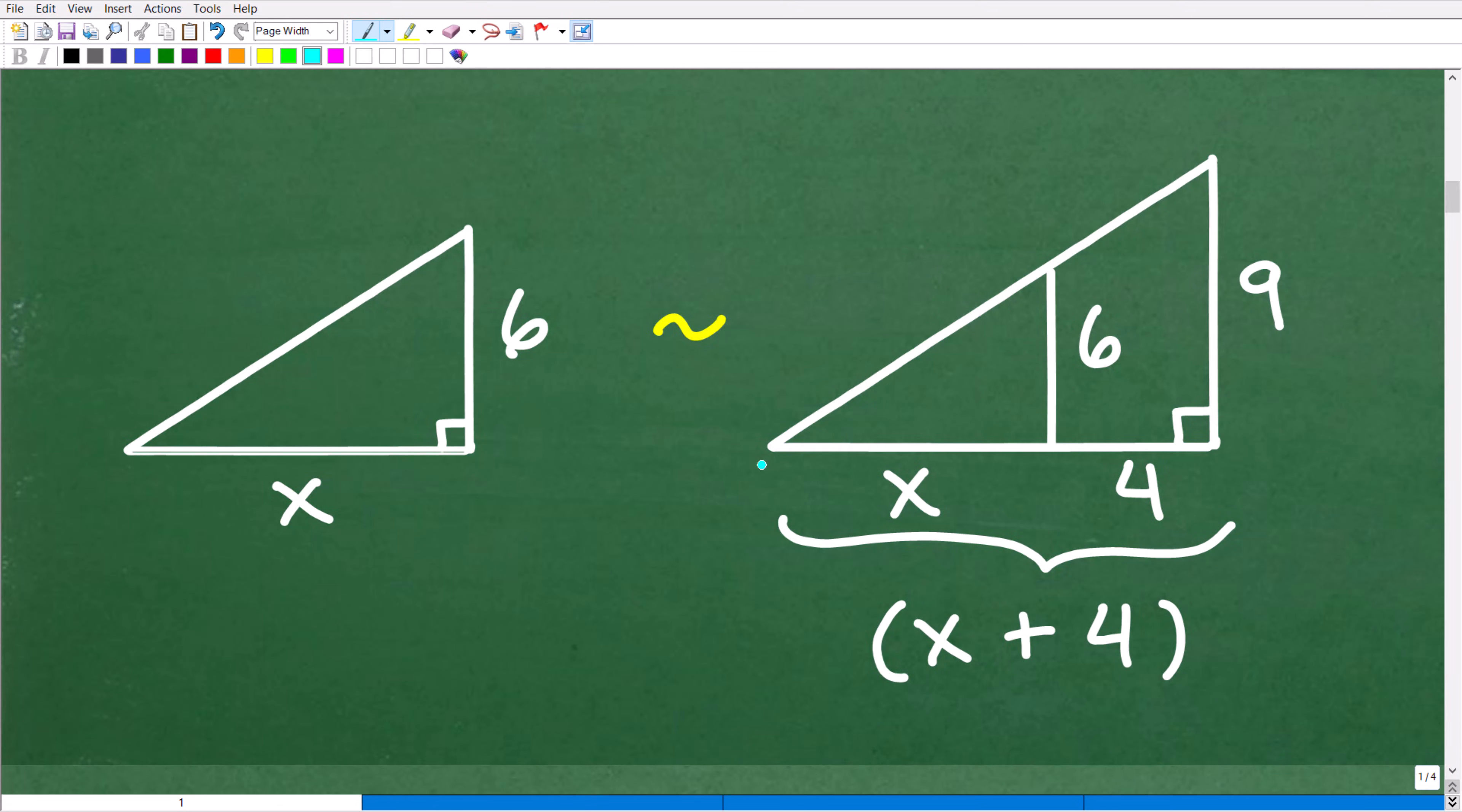Here is our problem - the big triangle has a height of 9, and this is x and this is 4. But let's take a look at this inside triangle. I'm going to break out this triangle and put it right here so we can compare. Here's the smaller triangle, here's the bigger triangle - its height is 6, its base is x. These are the heights of the triangles.